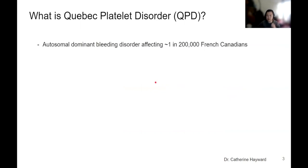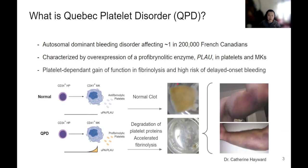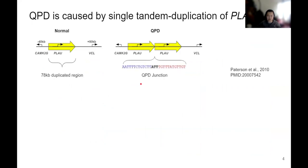QPD is an autosomal dominant inherited bleeding disorder affecting around one in every two to three hundred thousand individuals of French-Canadian ancestry. It is characterized by the overexpression of a pro-fibrinolytic enzyme, PLAU, specifically in platelets and megakaryocytes. This overexpression results in a platelet-dependent gain of function in fibrinolysis or clot breakdown, causing a high risk of delayed onset bleeding following certain hemostatic challenges. The mutation responsible for QPD is a single 78 kilobase tandem duplication of PLAU along with all of its known regulatory elements.